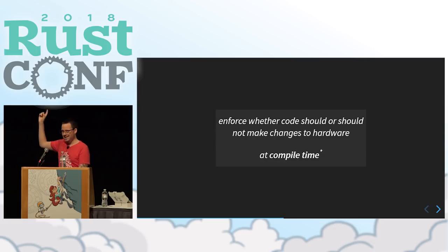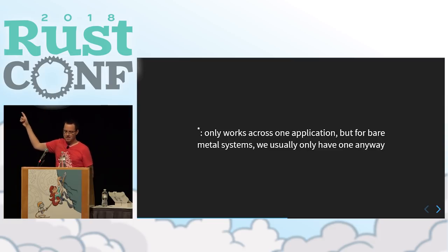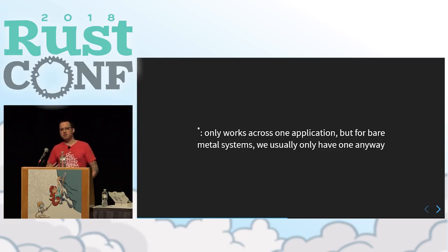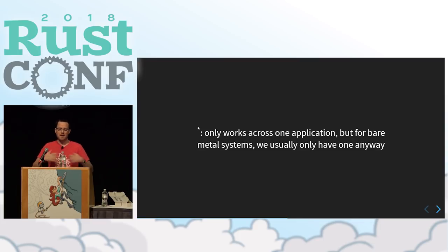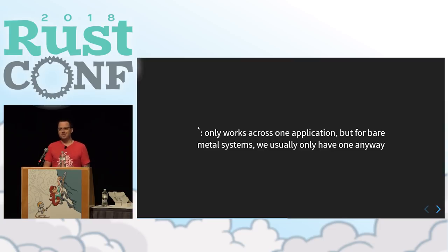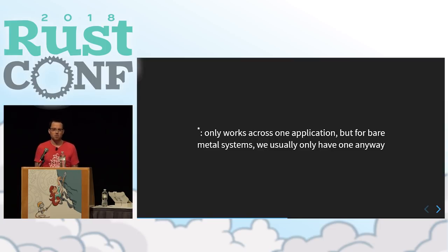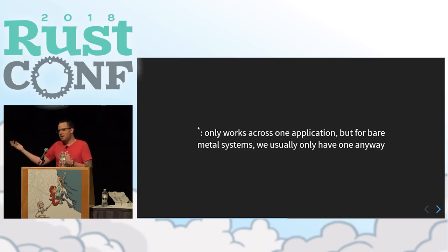There is a small asterisk: this only works across one application, because Rust only has a concept of tracking borrows and ownership within one application. But for these microcontroller systems, there is no OS running multiple applications — there is only the application running on your microcontroller. So this is a problem, but not for us.